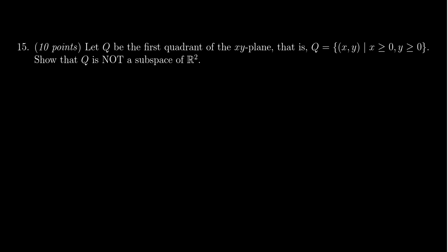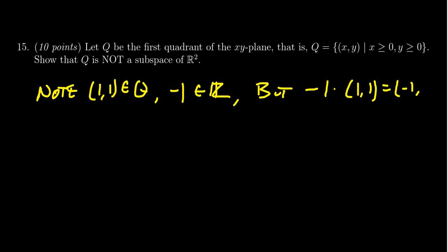So note that we can take the vector (1,1), which does belong to Q, and take the scalar -1, which is a real number. But if I take -1 and I times that by (1,1), this gives me the vector (-1,-1), which actually does not belong to Q because Q has to have non-negative entries, and (-1,-1) in fact has negative entries.